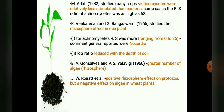In 1960, E. A. Gonslavs and V. S. Elabigi reported the presence of a greater number of algae in the rhizosphere. J. W. Rowett et al. reported a positive rhizosphere effect on protozoa but a negative effect on algae in wheat plants.